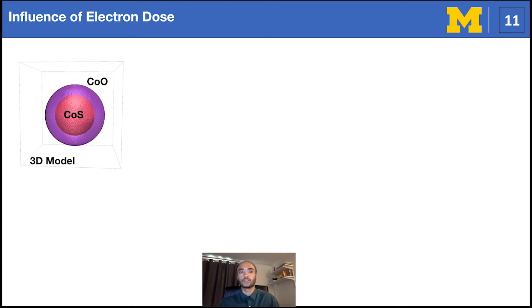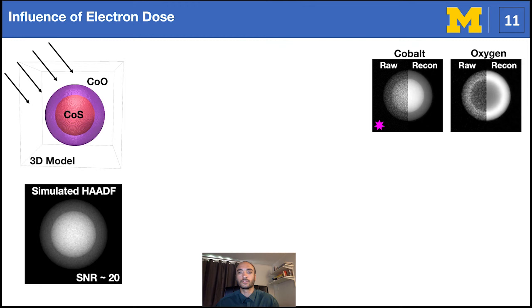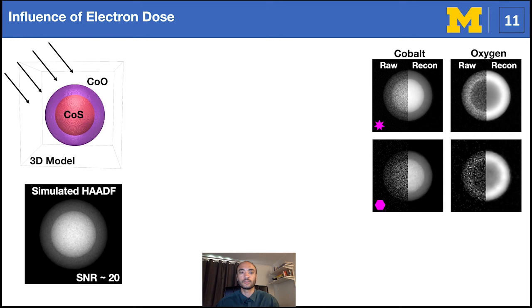Thus, we created a 3D core shell cobalt sulfide nanoparticle inspired by the EDX experiment. We simulated HAADF and chemical images and applied Poisson noise to produce realistic experimental images. We see the reconstructions are indistinguishable from the ground truth. We can also reduce electron dose and see qualitatively the results remaining consistent.